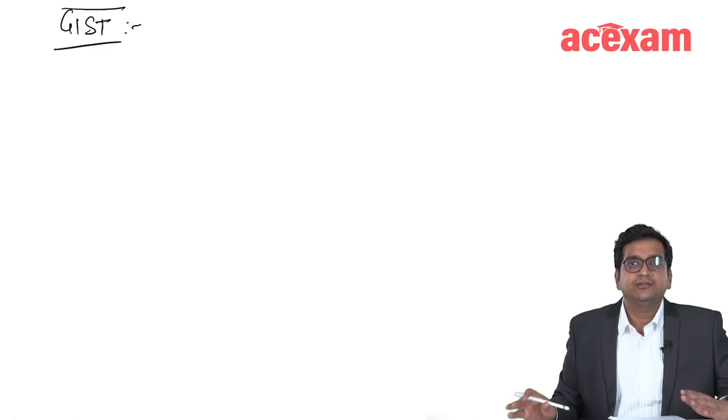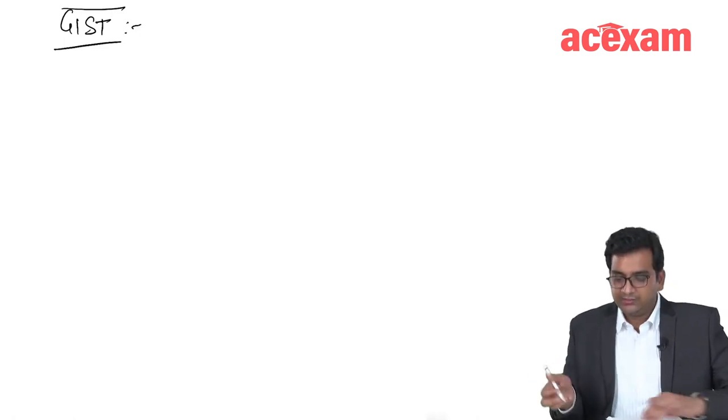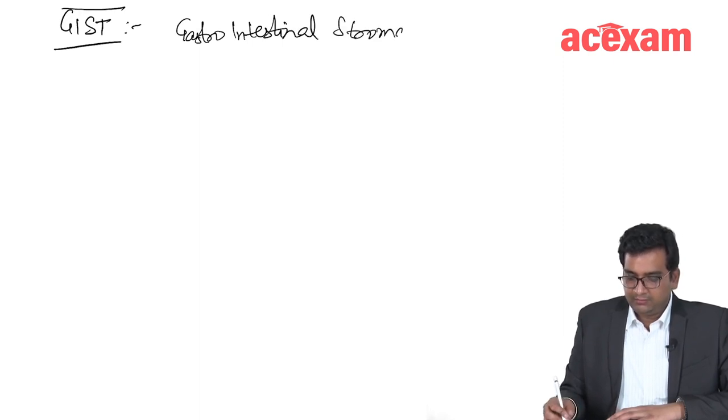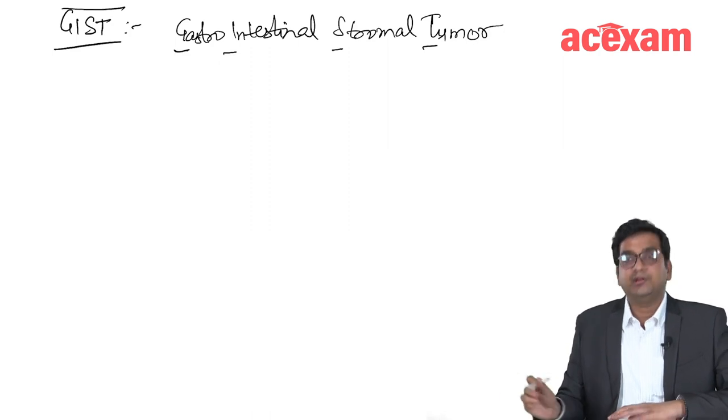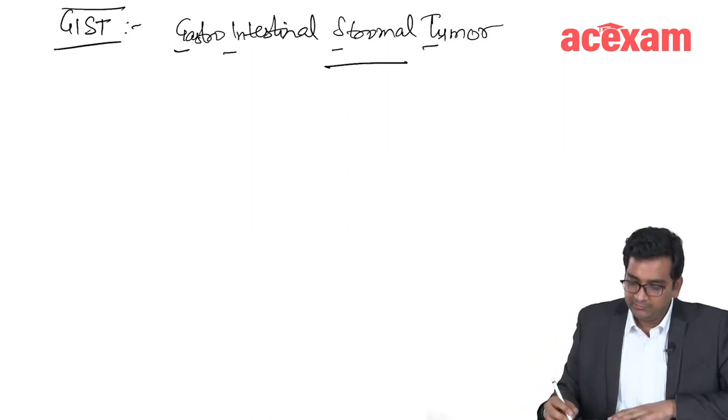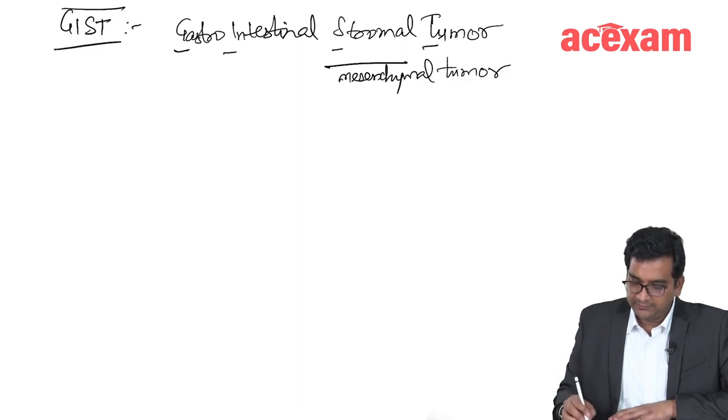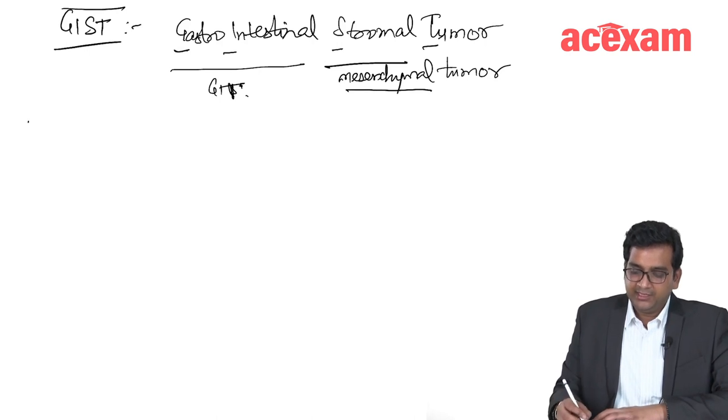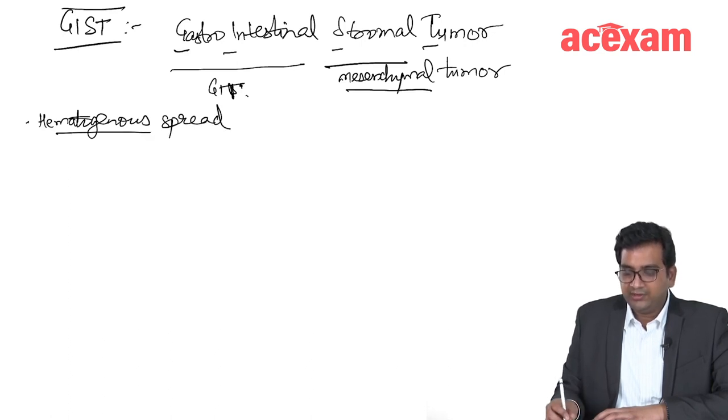Coming on to the next topic, GIST, which stands for gastrointestinal stromal tumor. This is a stromal or mesenchymal tumor of the gastrointestinal tract. All mesenchymal tumors have hematogenous spread. GIST also has hematogenous spread with no lymphatic spread.